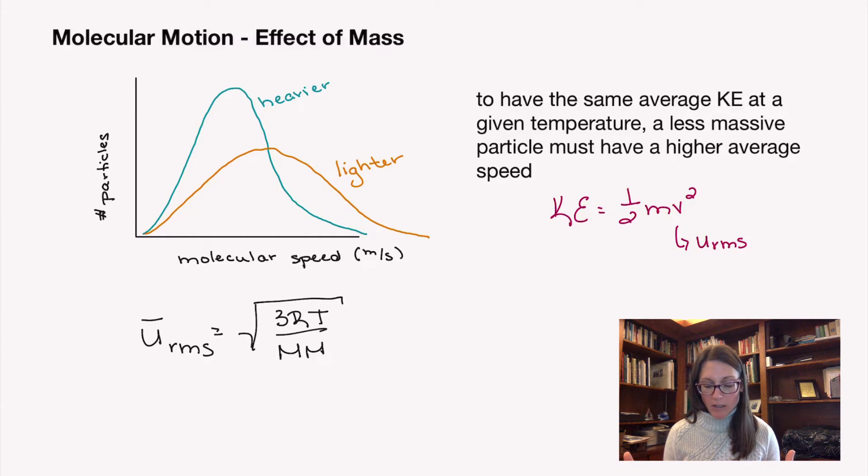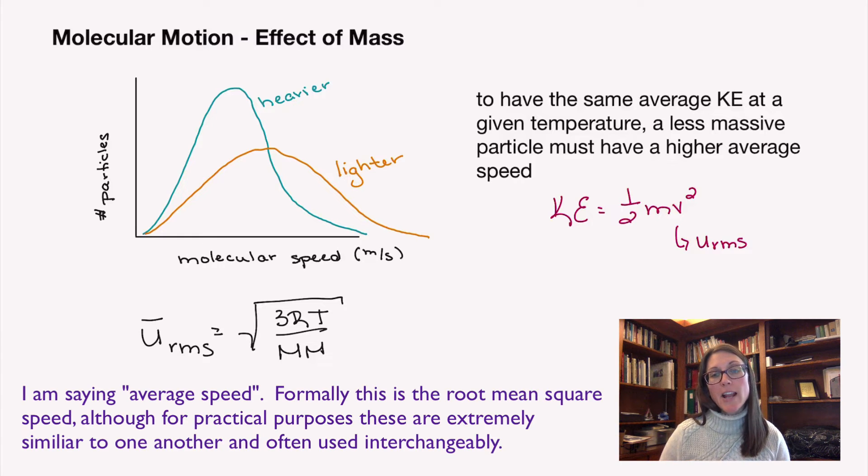So what does this mean? In order to have the same kinetic energy, if the mass is larger, you have to have a lower average speed. If the mass is smaller, you're going to have to have a larger average speed.